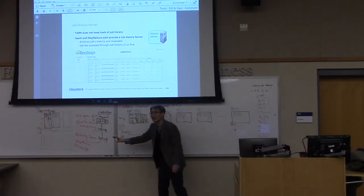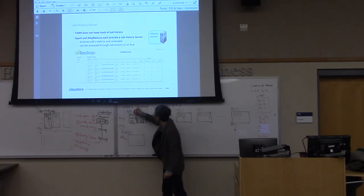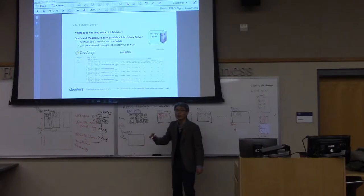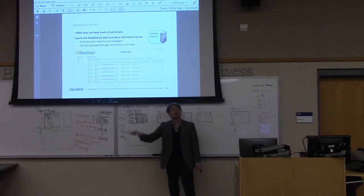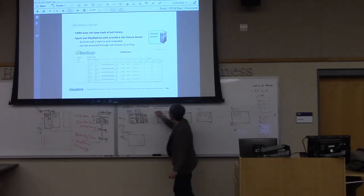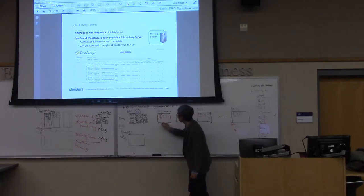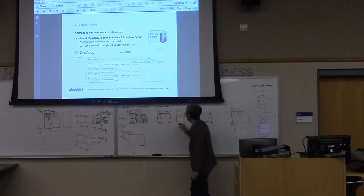I will correct it if I'm wrong. Job tracker is running per the application program. Then, for each node where the data block is located, the task tracker will be running.